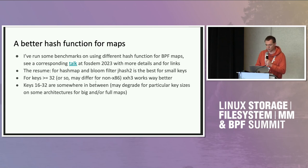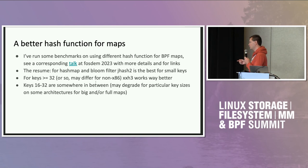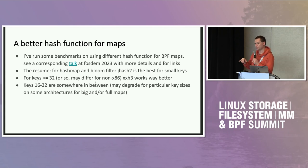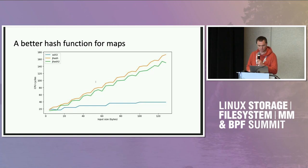The short summary is that jhash2 works pretty well for small keys, and it also works well in terms of collisions. But for bigger keys, there is a way to optimize hash maps by two or three times. Let's look at some plots.